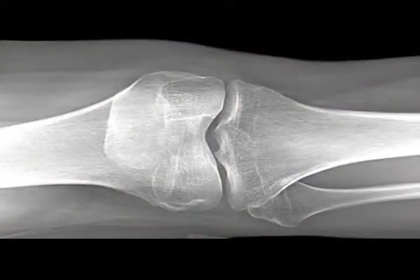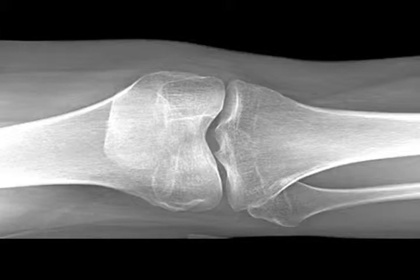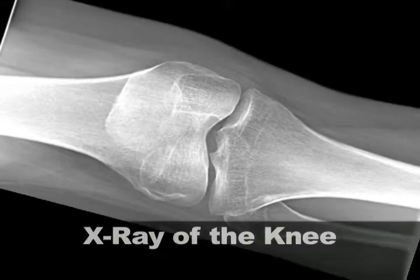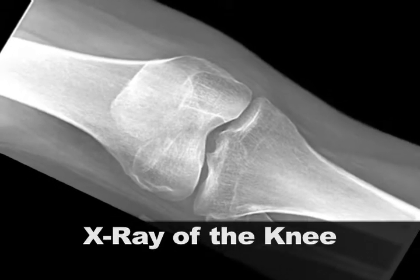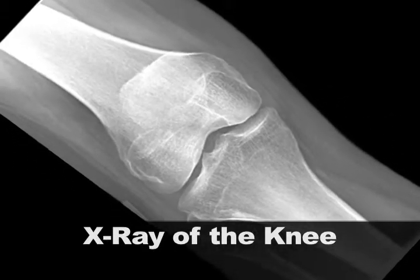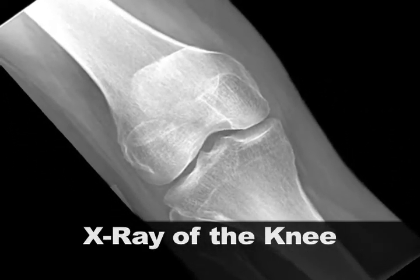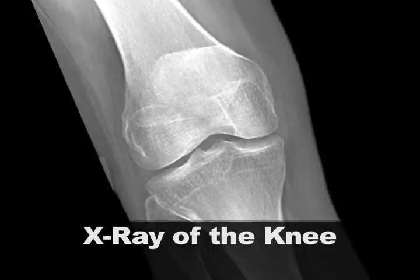This next one is pretty easy — it's a standard X-ray of the knee, looking directly at the knee. You can see the bones very well, the joint spaces, but not much other information beyond the bones. The space between the femur and the tibia and fibula — that's where the cartilage is, along with joint fluid, ligaments, and tendons.